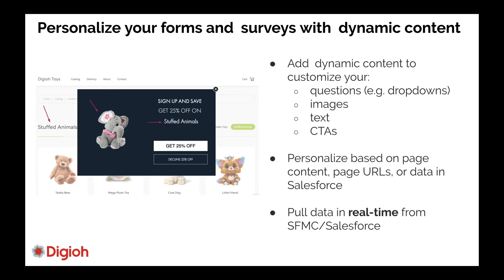You can also personalize your surveys with dynamic content. Sometimes you want to show a different question based on what they're looking at, or based on where they are in your funnel. You can target very specific actions on your site with specific survey questions, and you can dynamically change the images, the text, and the call to actions.